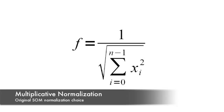Multiplicative normalization is the original normalization type that was introduced with the self-organizing map. To use multiplicative normalization, you must calculate the vector length, which will give you a normalization factor that will be multiplied against all of the input neurons. Here you see the vector length being calculated and resulting in f being the normalization factor. This value will be multiplied by all of the inputs.